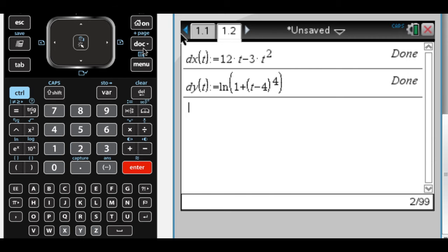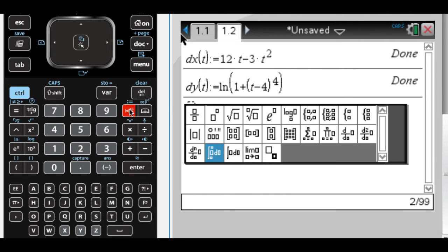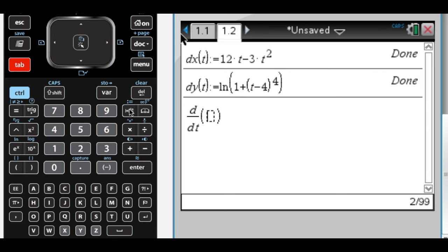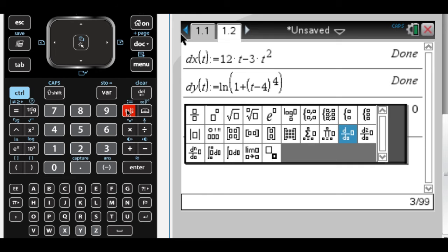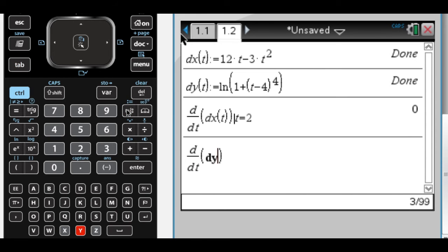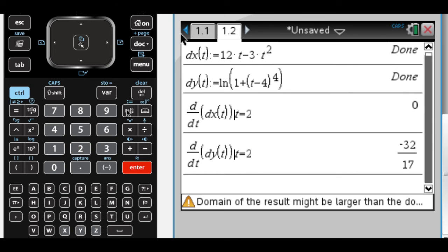All right, so the first question says acceleration vector at time t equals 2. So acceleration vector, I'm going to take the derivative with respect to t of dx of t at t equals 2. I'm going to take the derivative with respect to t of dy of t at t equals 2, and get those values or decimal equivalent. So I'd write down the vector 0 comma negative 32 over 17. That's my acceleration.